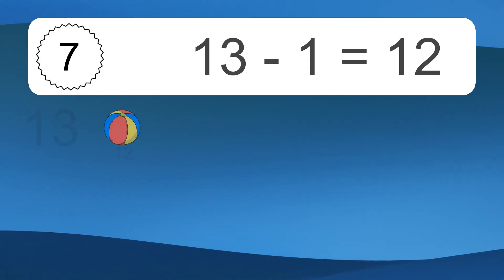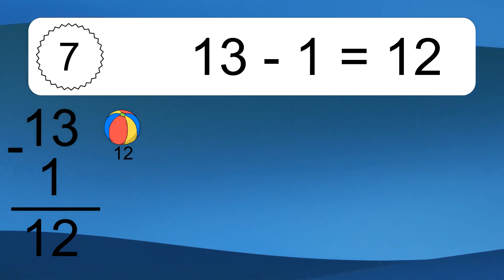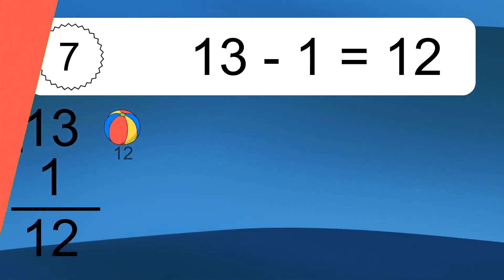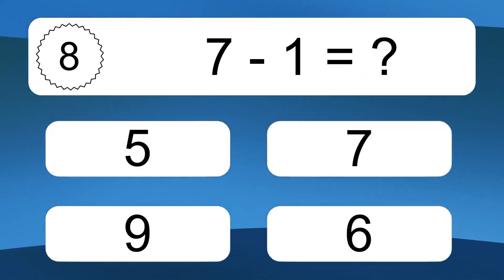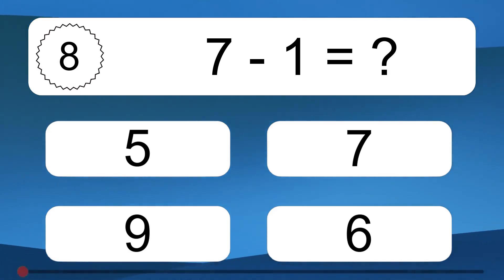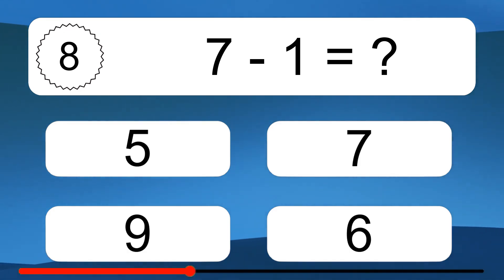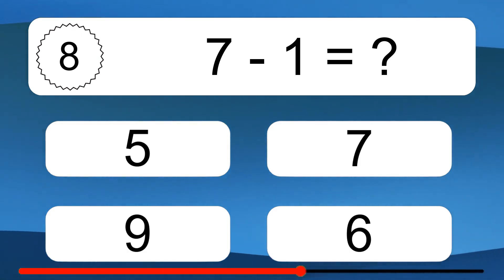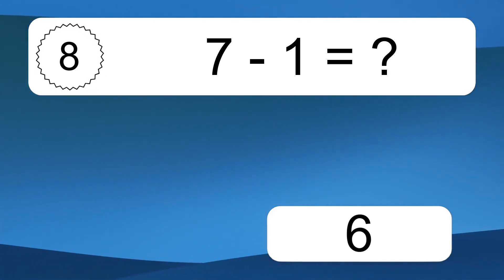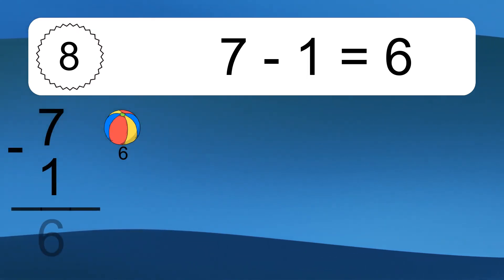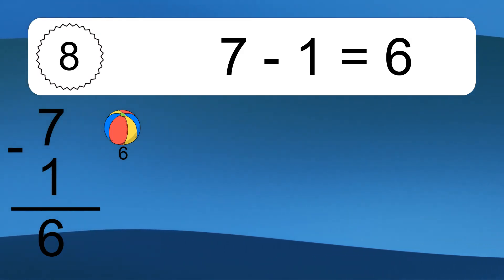13 minus 1 equals 12. Let's count it: 12. 7 minus 1 equals what? 7 minus 1 equals 6. Let's count it: 6.